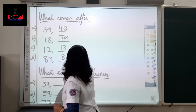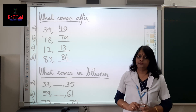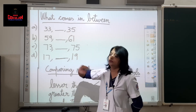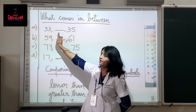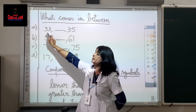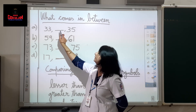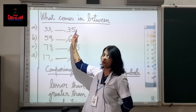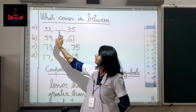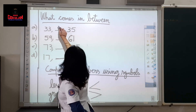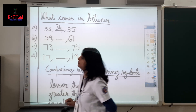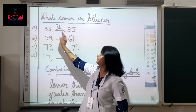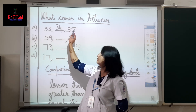What comes after 83? 84. Now let us discuss about what comes in between. Here you can see two numbers and a dash in between. What are these numbers? 33 dash 35. Which number comes in between 33 and 35? 33, then 34 — 34 comes in between 33 and 35.